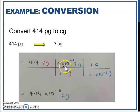So you can cancel out picogram. And we want to add centi, so put centi at the top. Centi equals 1 times 10 to the power of negative 2. Press calculator and settle all this calculation. You will get 4.14 times 10 to the power of negative 8 centigram.